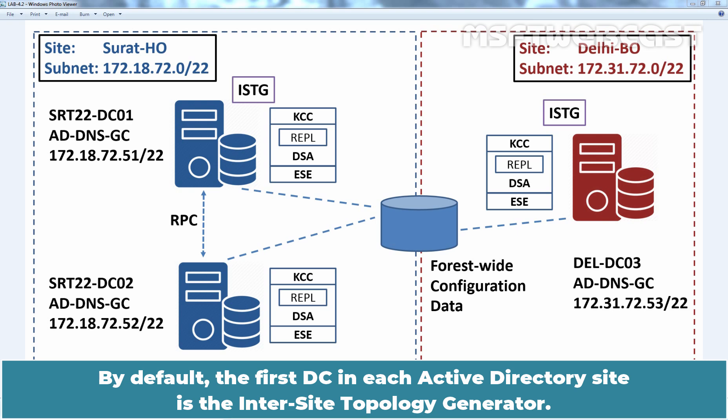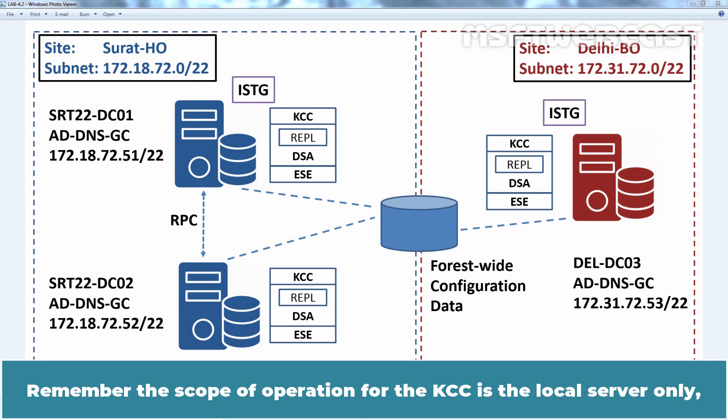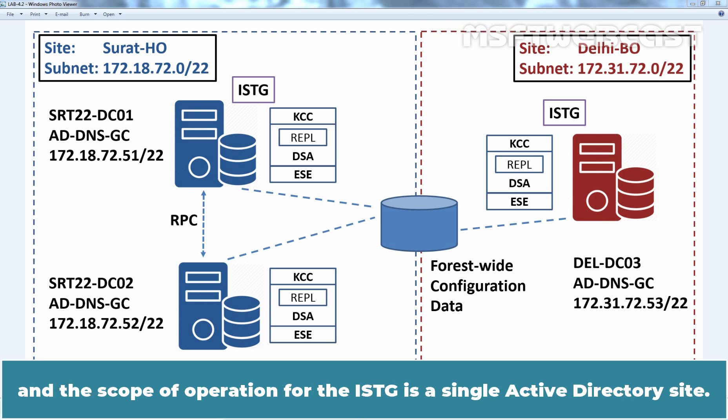By default, the first DC in each Active Directory site is the Inter-Site Topology Generator. Remember, the scope of operation for the KCC is the local server only, and the scope of operation for the ISTG is a single Active Directory site.